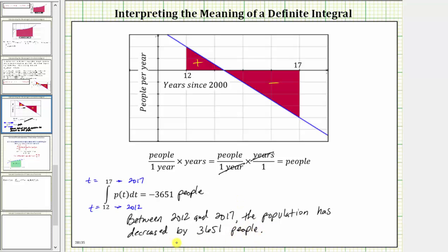And again, we know the population has decreased because of the negative sign. If this value was positive, the population would have increased over this time period.